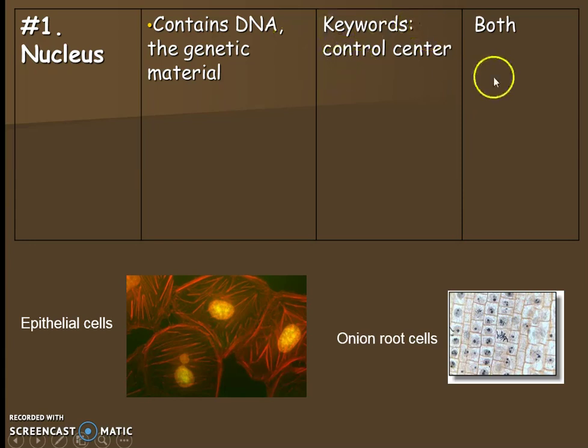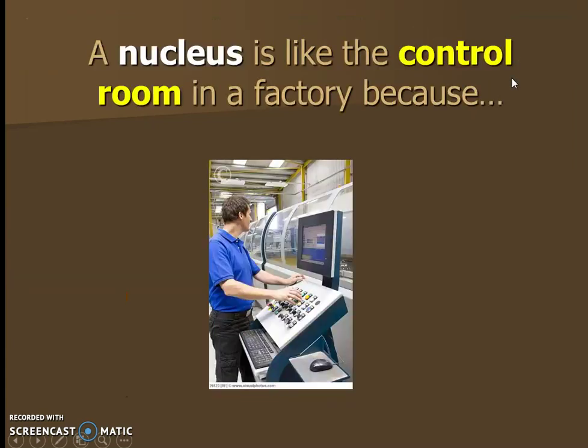The keyword for the nucleus is 'control center.' The nucleus is like the control room in a factory, because the control room controls everything going on in the factory and gives directions — just like the nucleus does in the cell, since it holds all the DNA with all the cell's instructions. You'll also be creating your own analogies in class.